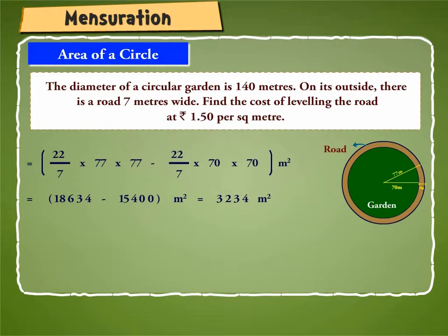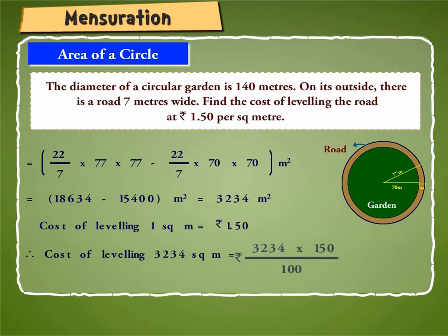Because cost of leveling 1 square meter is equal to ₹1.50, therefore cost of leveling 3,234 square meter is equal to ₹3,234 into ₹150/100 is equal to ₹4,851.